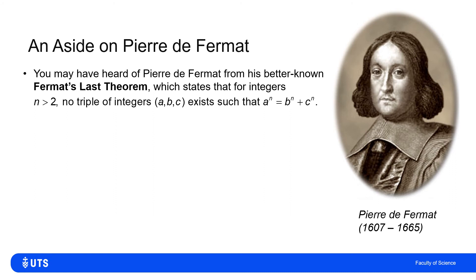As well as the little theorem, there's probably the much better known Fermat's last theorem. You probably know from Pythagoras' theorem that for a right angle triangle, the length of one side squared is equal to the sum of the length of the other two sides squared. So you can find relationships like 3 squared plus 4 squared is 5 squared.